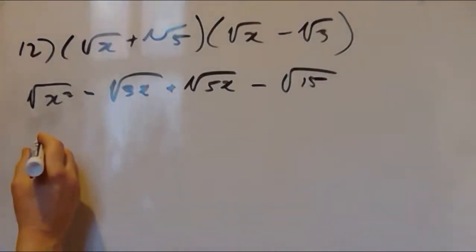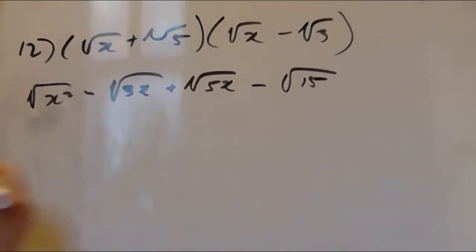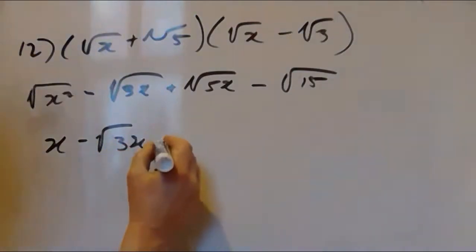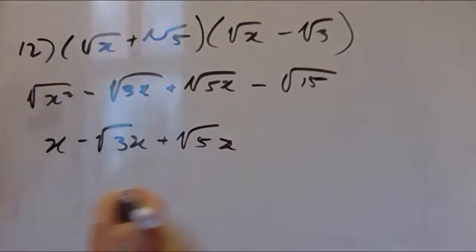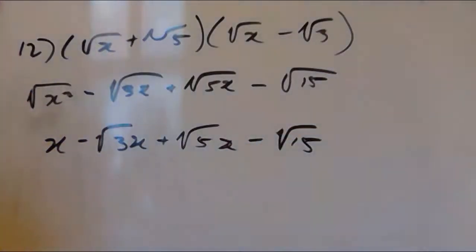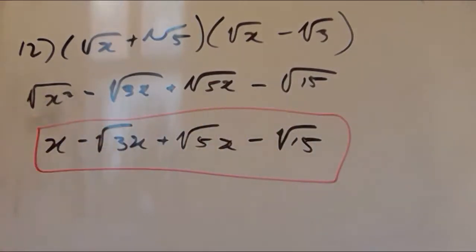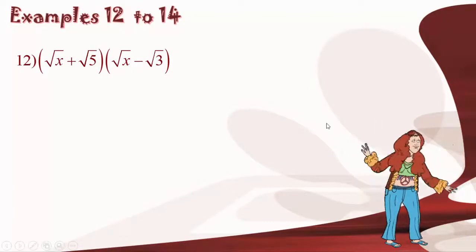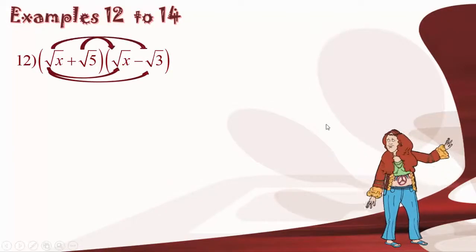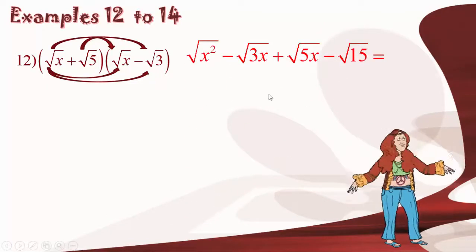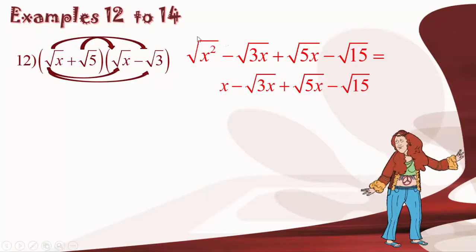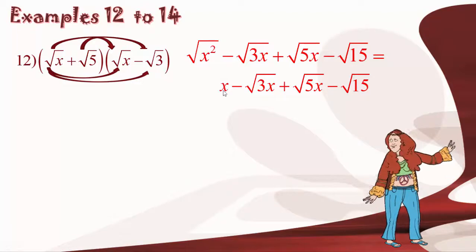We simplify as much as possible. The square root of x squared simplifies to x, giving us x minus square root of 3x plus square root of 5x minus square root of 15. Since we cannot simplify further or combine any like terms, this becomes our final answer. We used FOIL to expand, noticed no like terms to collect except simplifying the x squared, and this was our final answer.